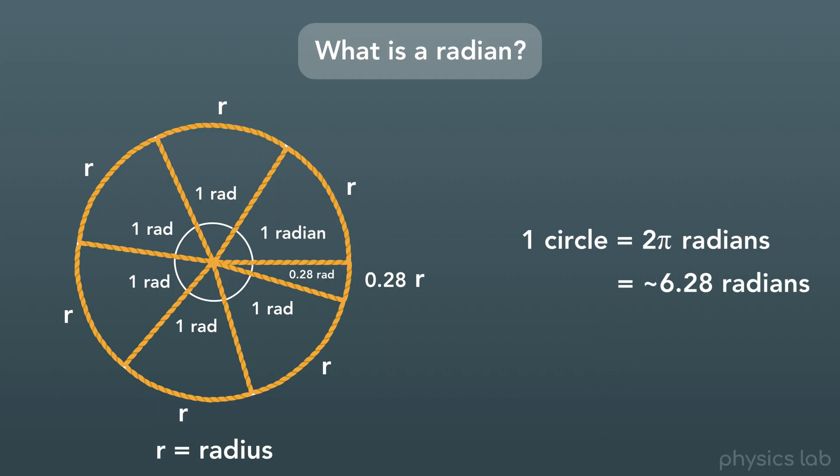You might notice the similarity to the equation for the circumference of a circle. Circumference equals 2 pi times the radius.